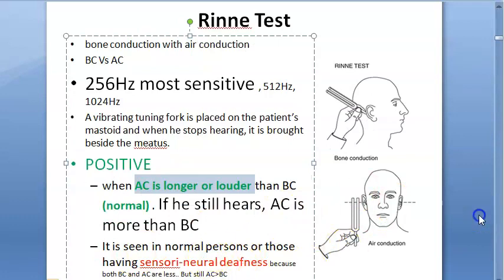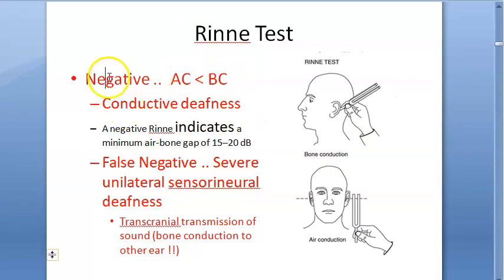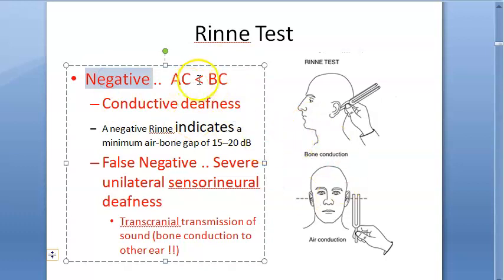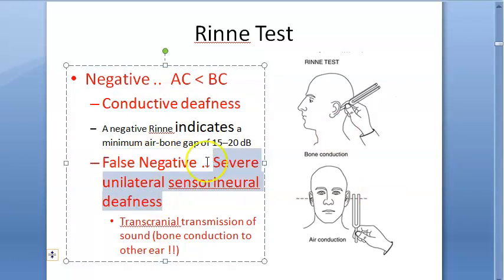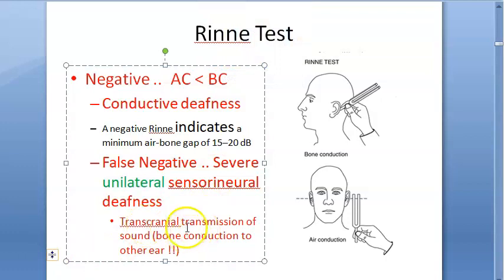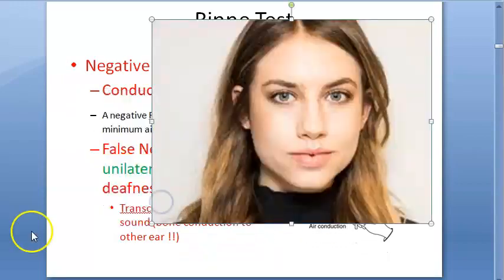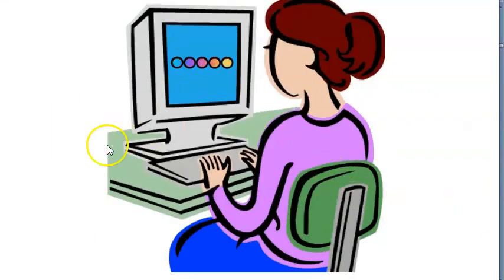A positive Rinne's test can also occur in sensorineural deafness. If a negative Rinne's test comes, it means air conduction is less than bone conduction — indicating conductive deafness. An important point: a false negative Rinne's test occurs in severe unilateral sensorineural deafness. There is transcranial transmission of sound from one ear to the other, so bone conduction is perceived by the opposite ear — giving a false negative even in sensorineural deafness.